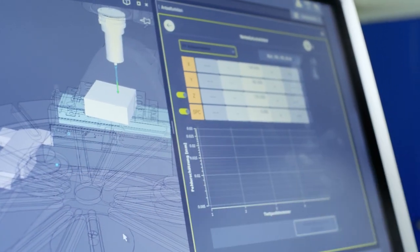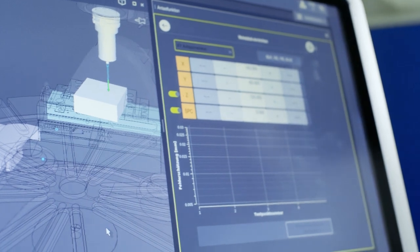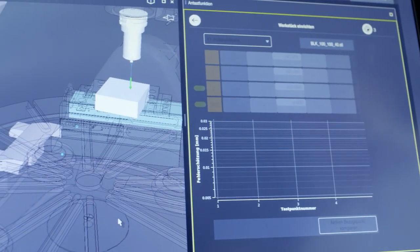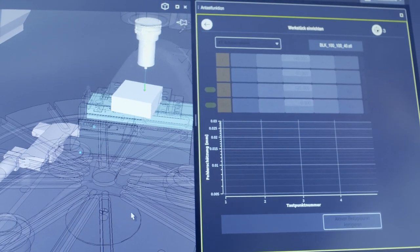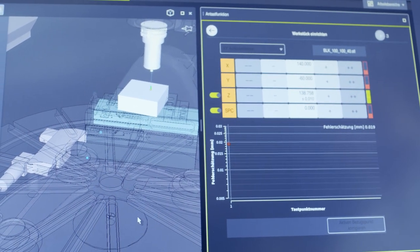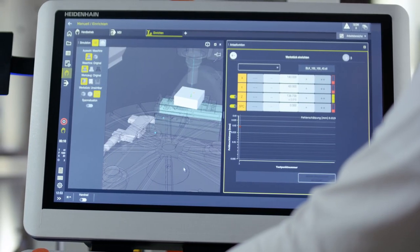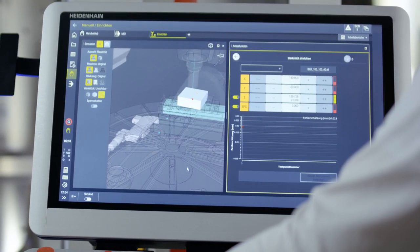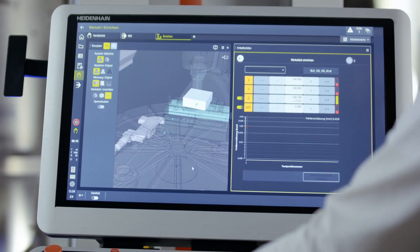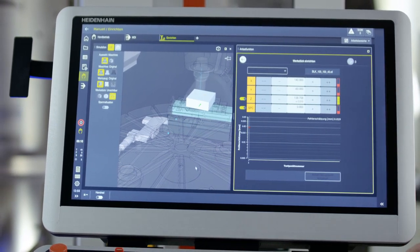That means I can't start the probing function yet. As soon as the arrow is green, I can press NC start to begin the probing process, and the first point is measured. Then I position to the left side, and then go down, and then trigger the second probing point.